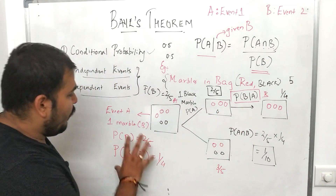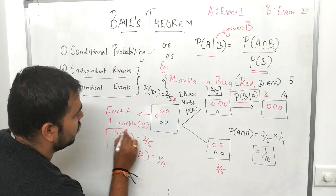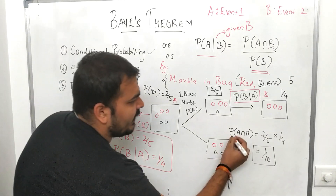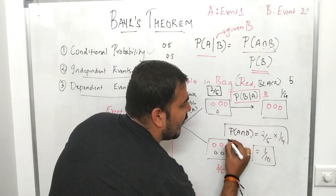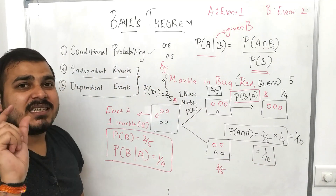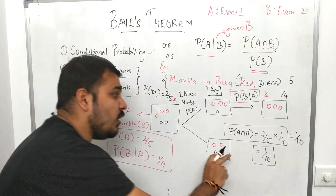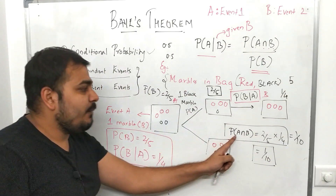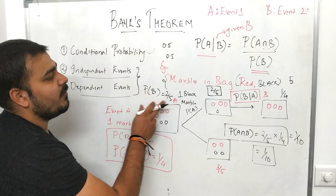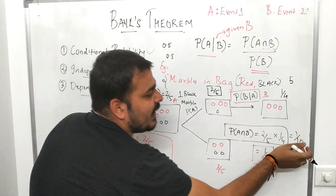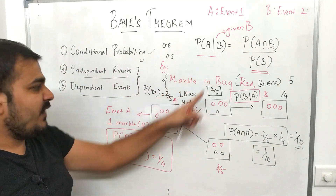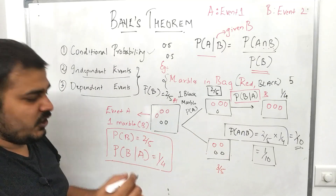Now if I multiply both probabilities — two by five and one by four — I get one by ten. This value one by ten represents the probability of both events A and B taking place together, i.e., P(A intersection B). So we are combining these probabilities: two by five multiplied by one by four equals one by ten.